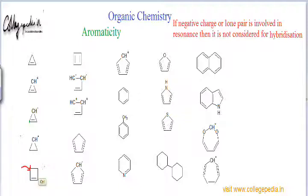The next structure possesses all atoms as sp2 hybridized because all atoms are involved in making a pi bond. Since all atoms are sp2 hybridized, the molecule is planar. There are 4 pi electrons — 2 pi bonds, each with 2 electrons, giving 4 altogether. So it has 4n pi electrons where n equals 1, satisfying the condition of anti-aromaticity. This intermediate is anti-aromatic.